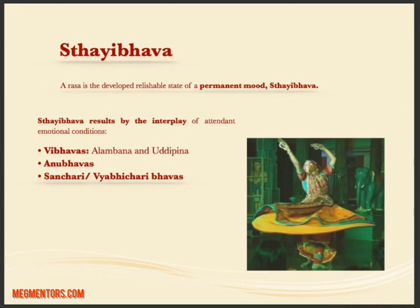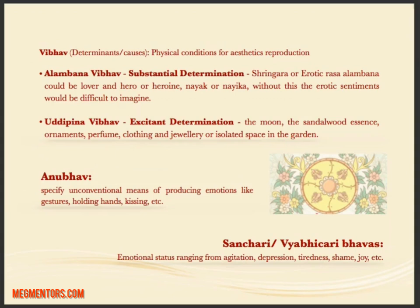A very important term is Sthaibhav. Sthaibhav or Sthir means something that is permanent. From the Sthaibhav, the Ras is evoked or developed whenever you come in contact with a form of art. Sthaibhav results from the interplay of three emotional conditions: Vibhava, Anubhava, and Sanchari. Vibhava is further divided into Alamban Vibhav and Uddipana Vibhav. Please learn these by heart.